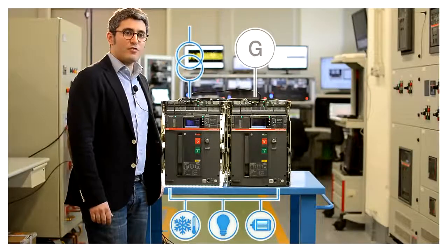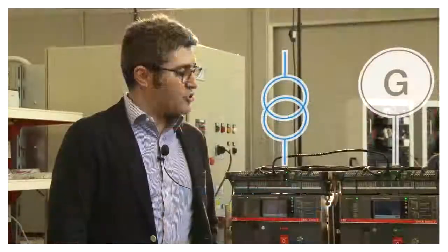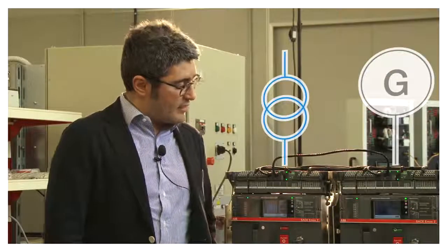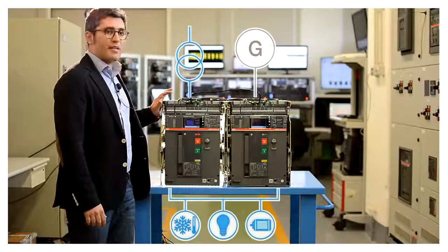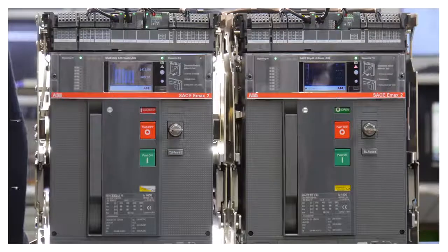ATS is automatic transfer switch function able to manage different power sources in our electrical plan. What means that in this case we have a grid line where we have the first circuit breaker and a second line with emergency circuit breaker.